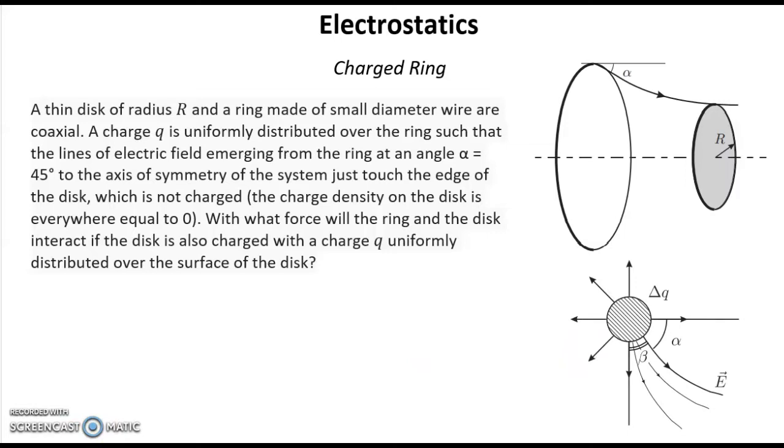We will just take a close look to the cross section of this ring very close to its surface. If the diameter of this wire is very thin, it means that all these electric field lines are going almost symmetrically like for an infinite straight wire charged with the same charge density.